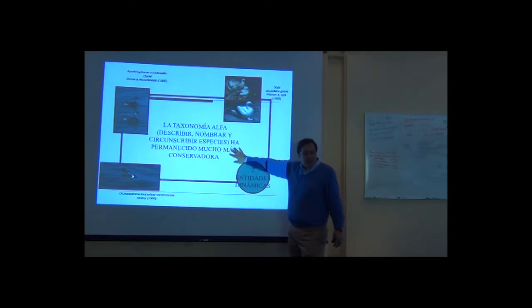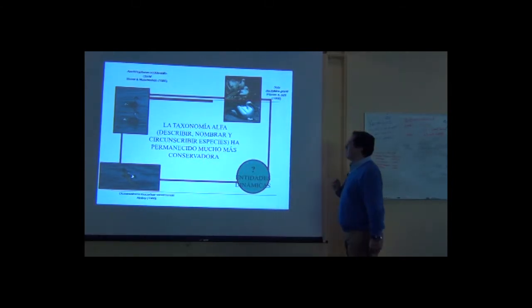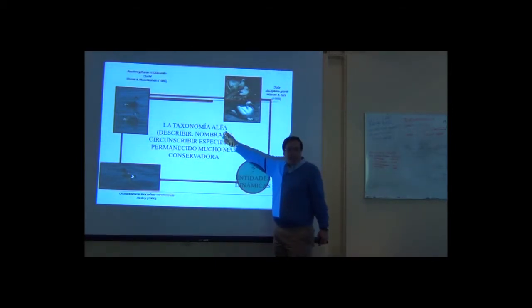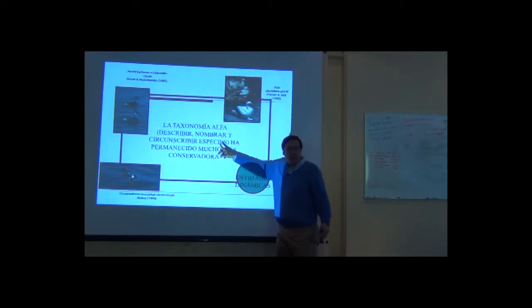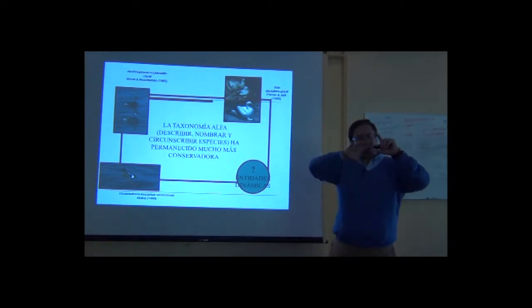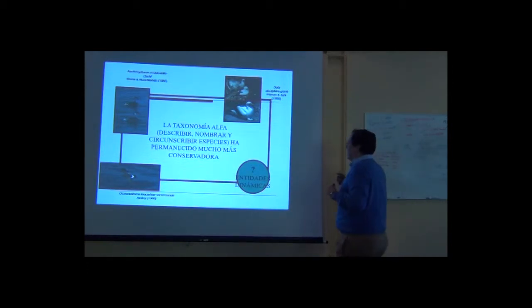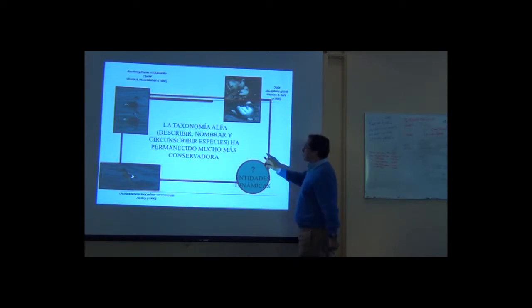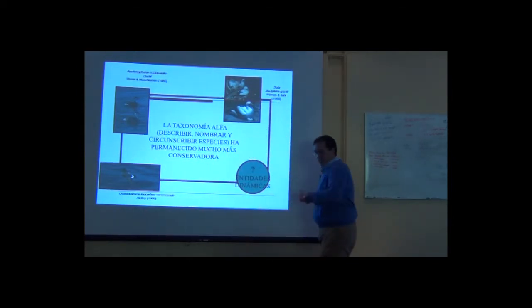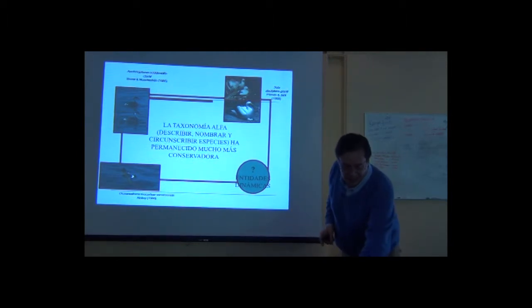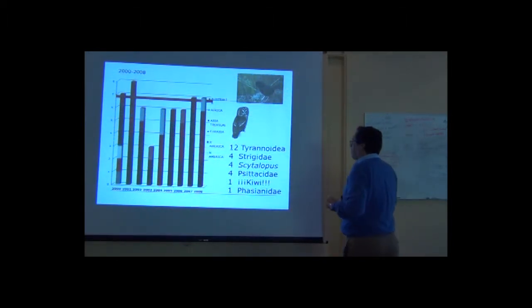However, we have this taxonomic work that goes lower in the classification. We call alpha taxonomy. That alpha taxonomy is the part of taxonomy that deals with the description and naming and the circumscription of species. The circumscription of species is that we draw a line, that we limit the contents of those units. And this part of the classification, the limitation of species is very conservative. Instead of being open like it's a higher level classification of taxa, this is very, very conservative.